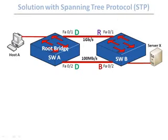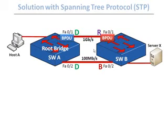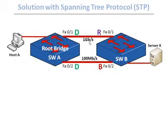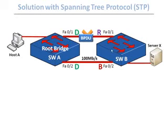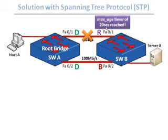Once the loop-free topology is established, switches continue exchanging BPDUs every two seconds to monitor it. If the active link fails — say the cable goes bad — the root bridge and other bridges won't be able to receive BPDUs. In this case, switch B won't receive BPDUs.